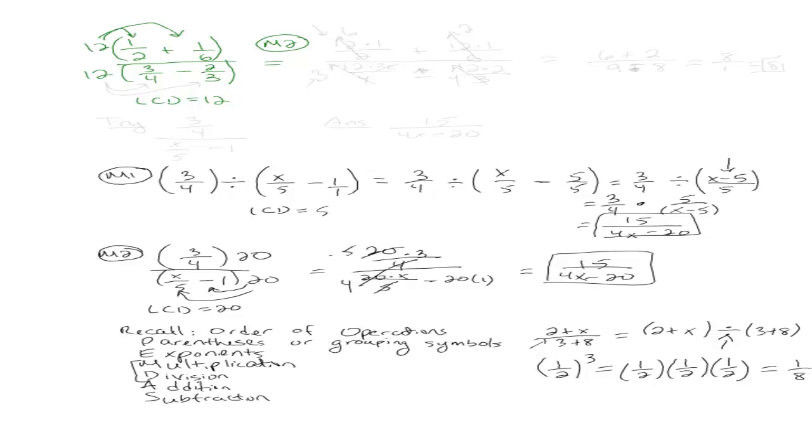So this is basically the distributive property. So if I distribute this 12, I get 12 times 1 over 2 plus 12 times 1 over 6. Let's work on the bottom fractions now. Again, I'm going to distribute it using the distributive property. So the first becomes 12 times 3 over 4, and the second one becomes minus 12 times 2 over 3. Questions so far about how I got there?